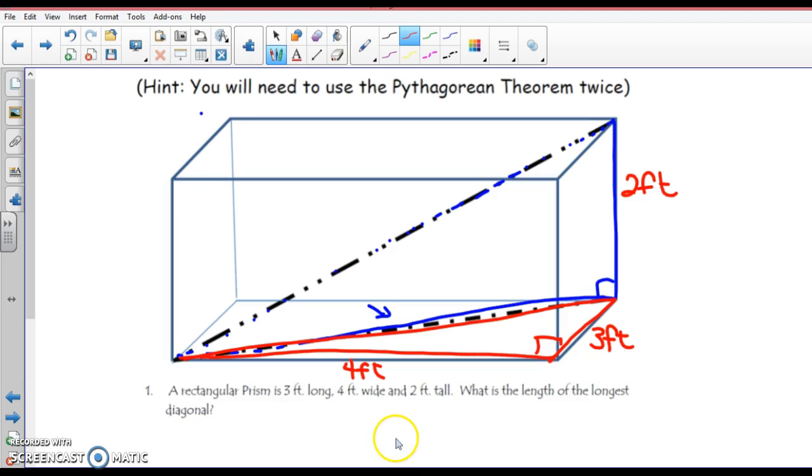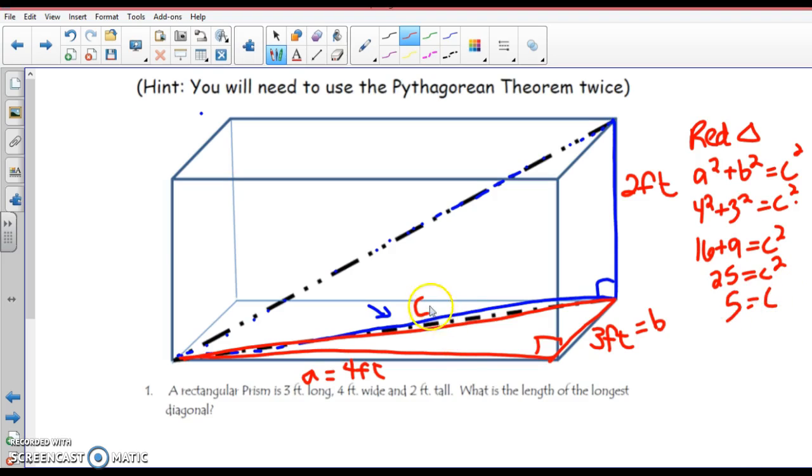So what letter am I going to call that? C. Do you see that red triangle? You guys should be writing this down. The red triangle is going to be a squared plus b squared equals c squared. And isn't this a and b? Do you agree with that? C is always the hypotenuse, right? So I will have 4 squared plus 3 squared equals c squared. This will be what? 16 plus 9 equals c squared. 25 equals c squared. What's c? It's 5.